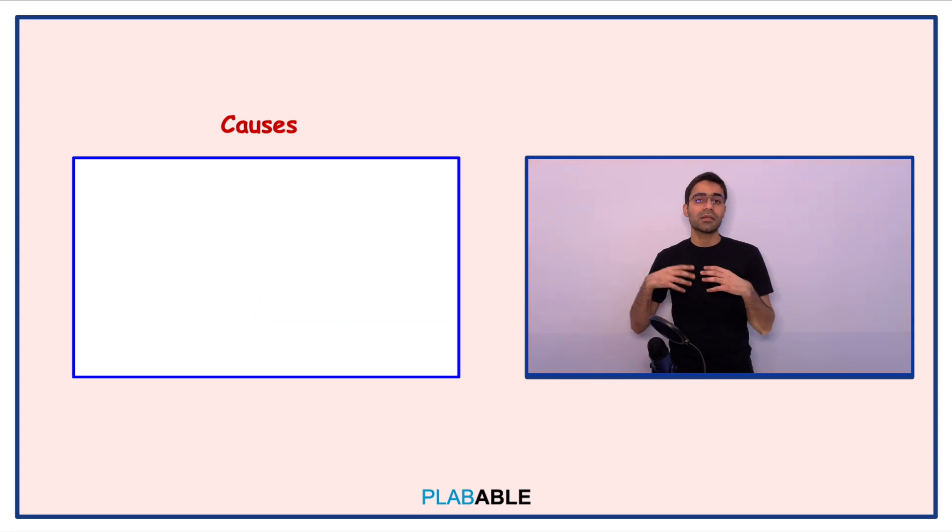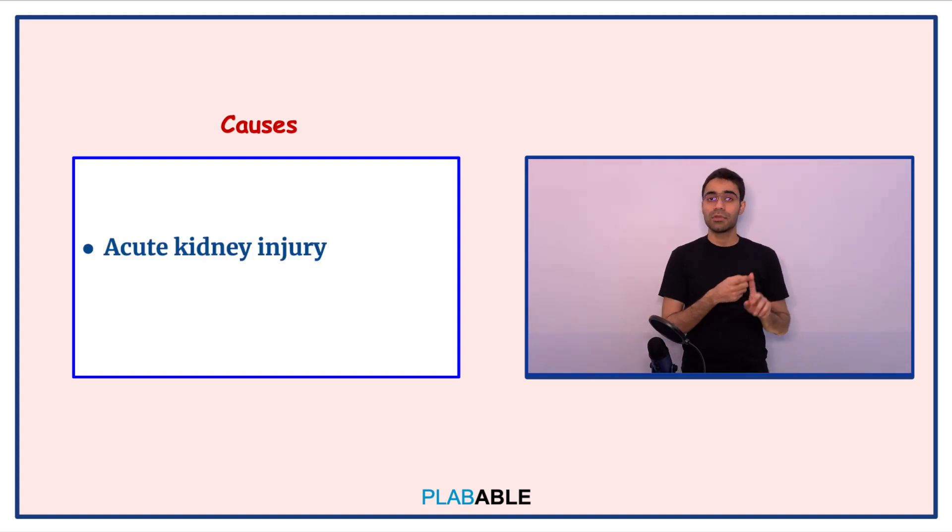Now if you look at the causes, the causes which are important for the exam point of view, we have acute kidney injury, where the kidney injury extends into the cells of distal nephron or collecting duct, thereby damaging those cells which help in the secretion of potassium into the urine.